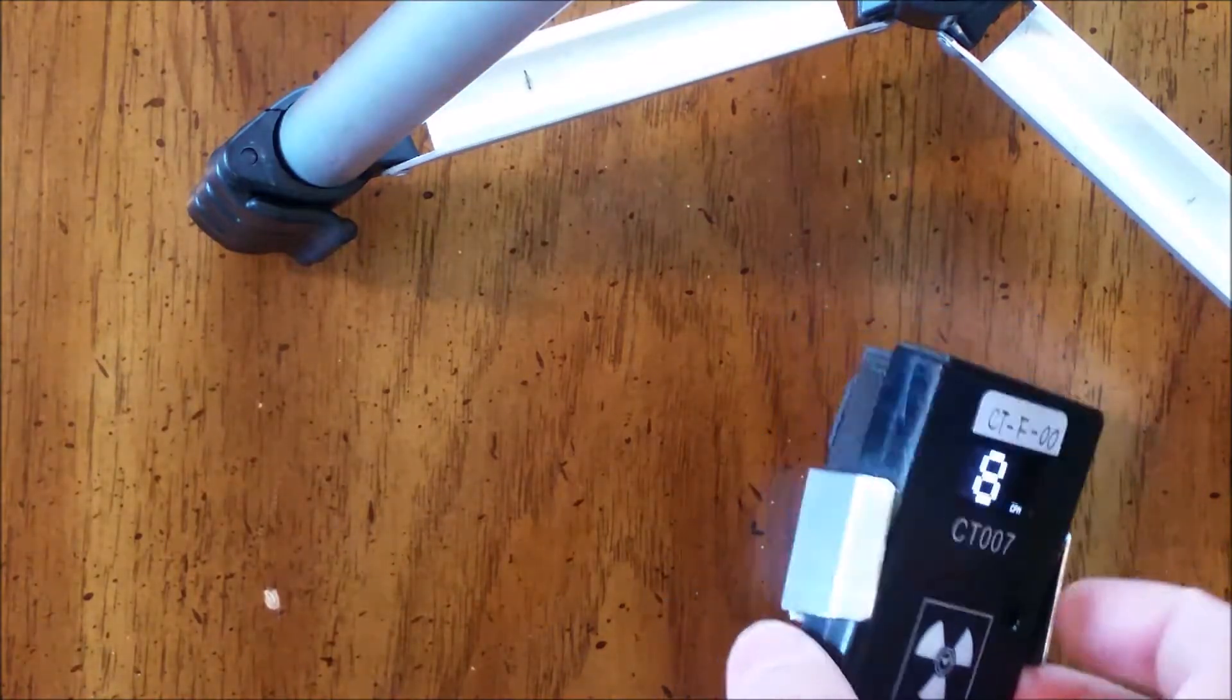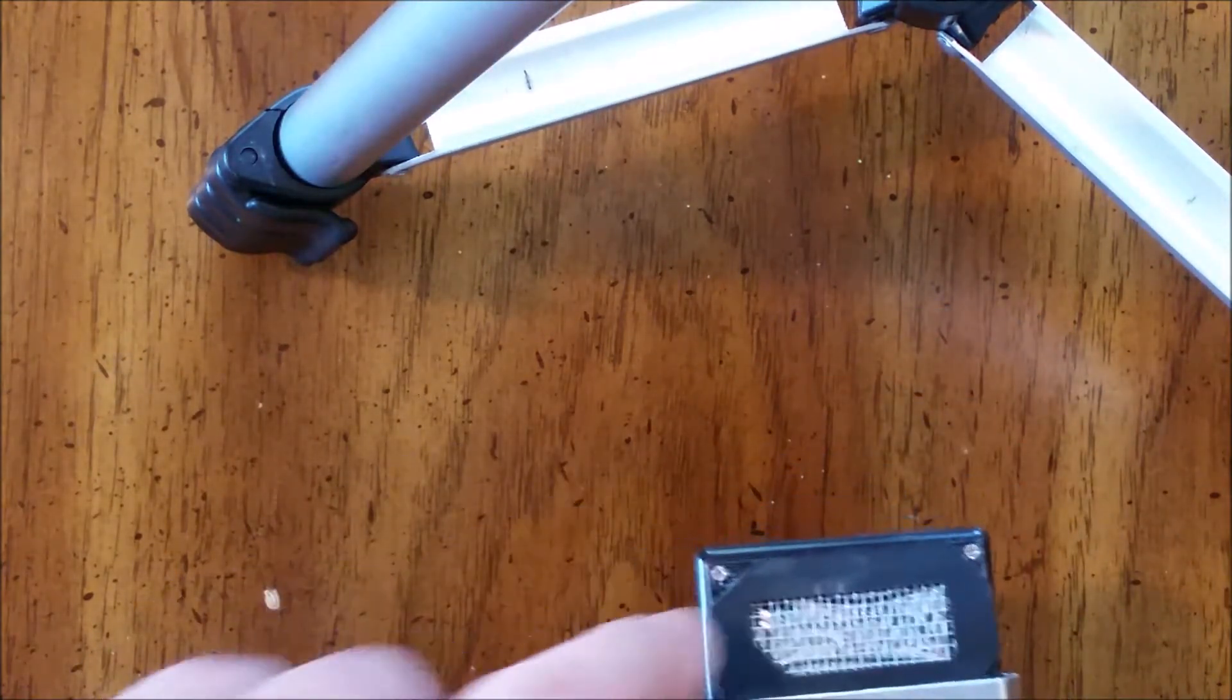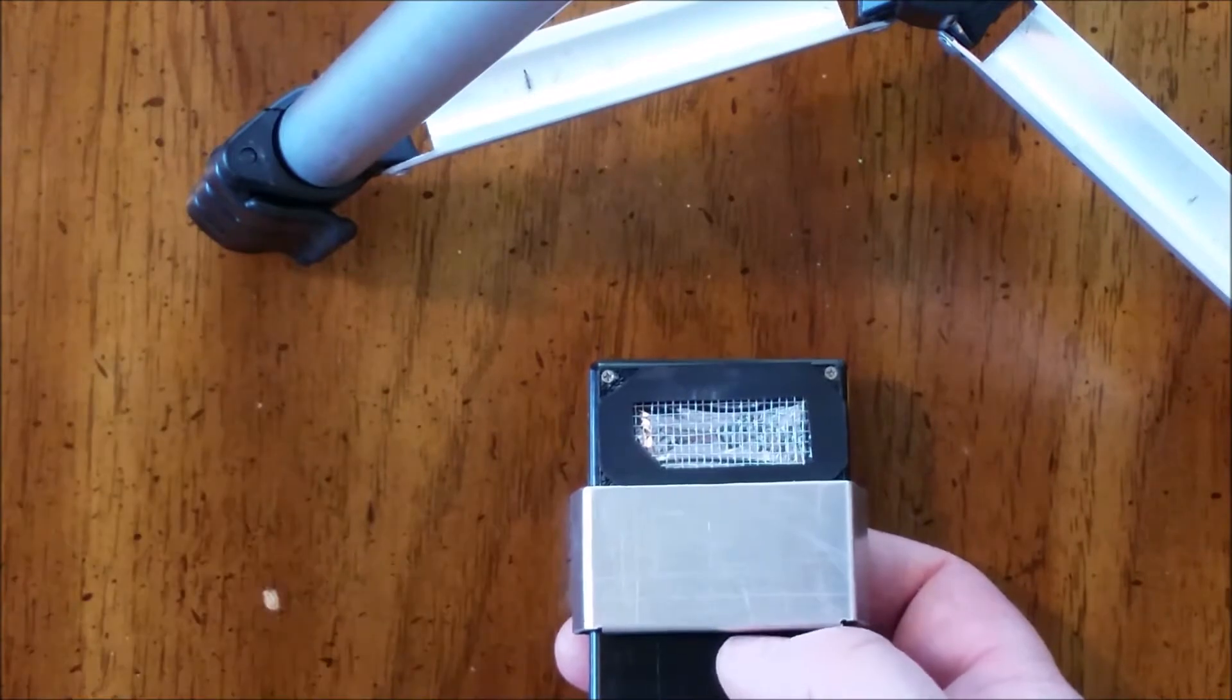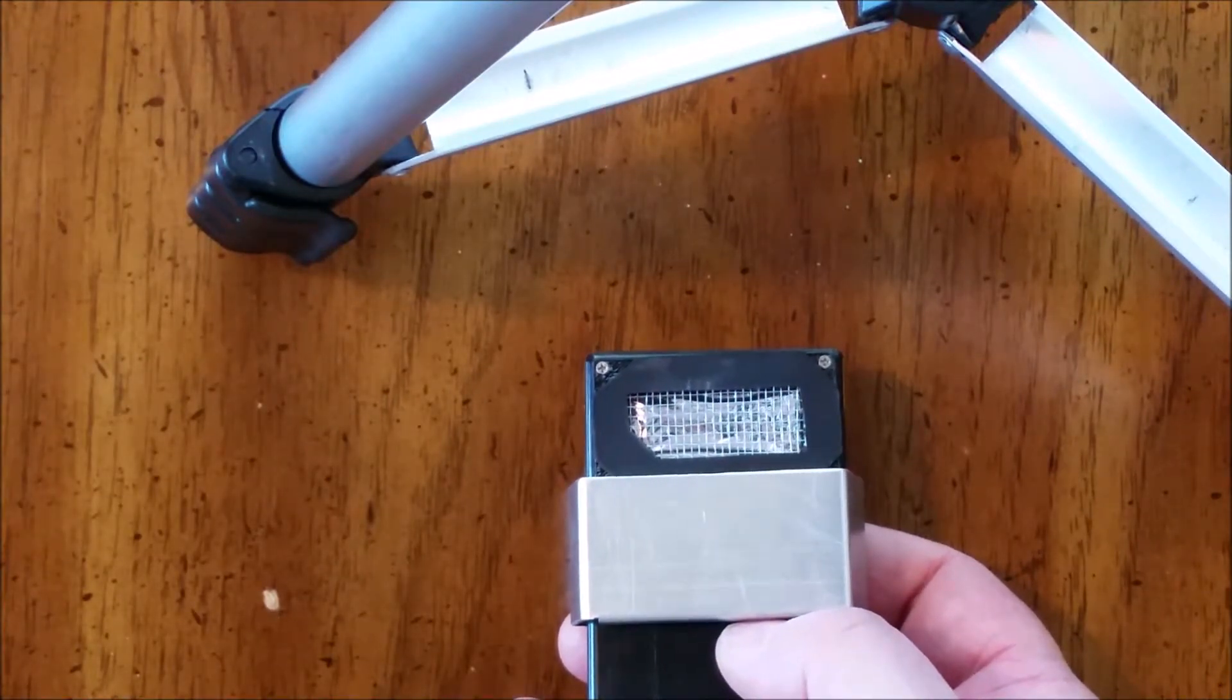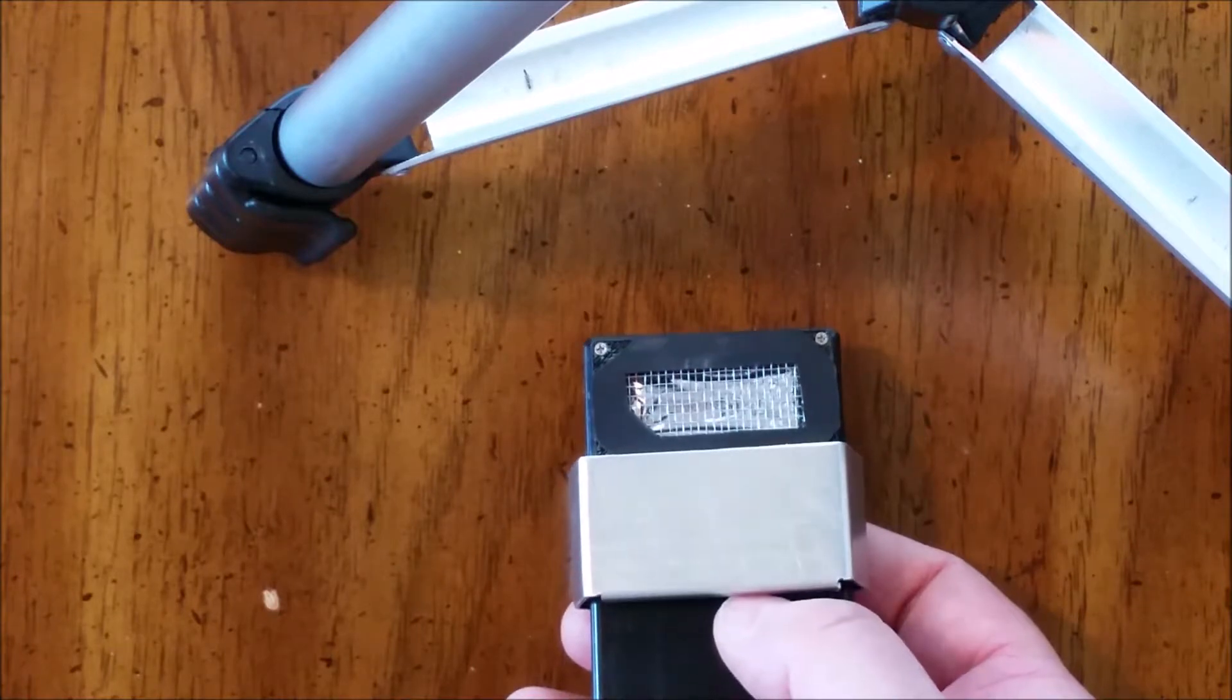The CT-007F is much more robust. Our actual detector is a solid piece of plastic scintillator. So there is no tube to pop.